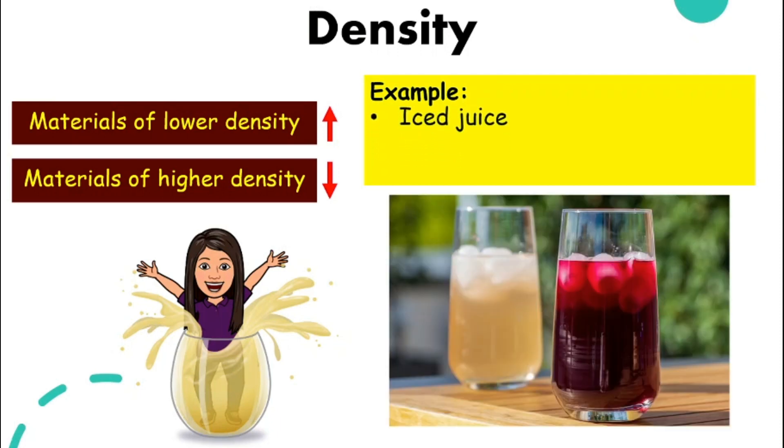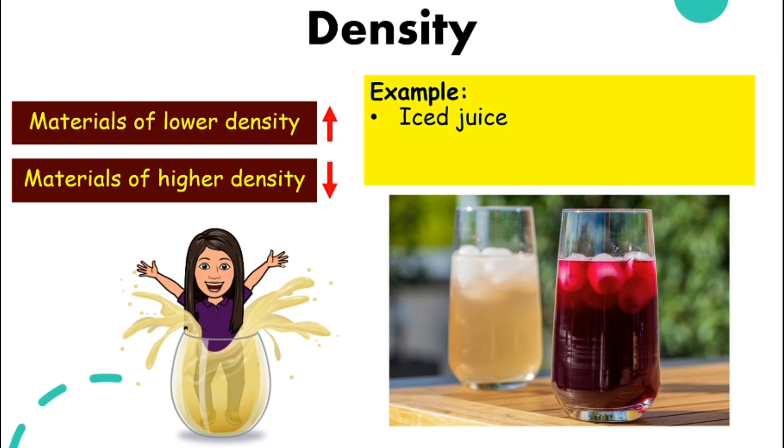For example, ice juice. If you notice that every time you have ice juice, the juice is at the bottom and the ice cubes will be on top.